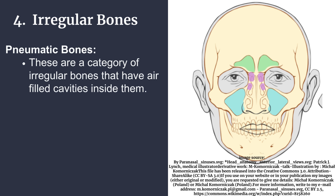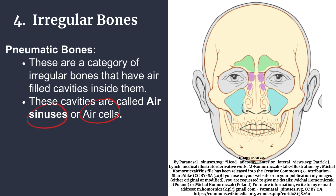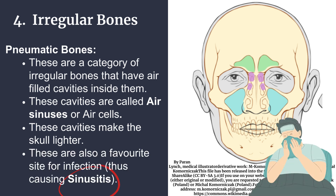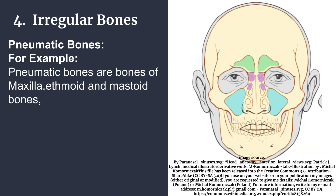A special type of irregular bones is pneumatic bones. These are a category of irregular bones that have air-filled cavities inside them. These cavities are called air sinuses or air cells. These cavities make the skull lighter, and they are also a favorite site for infection, thus causing sinusitis. For example, pneumatic bones include the maxilla, ethmoid, and mastoid bones.